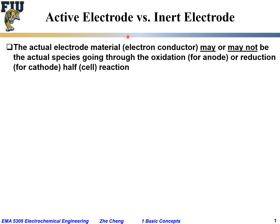For an electrochemical cell, one interesting feature is the concept of the so-called active electrode, and in comparison, the so-called inert electrode. The actual electrode material — which conducts primarily electrons or electron holes — may or may not be the actual species that undergoes oxidation at the anode or reduction at the cathode in the half-cell reaction.